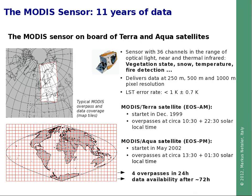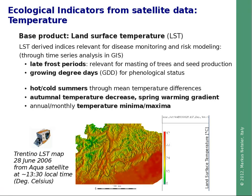We have been focusing on the land surface temperature product, from which a series of indicators can be derived. These temperature-related products are of great relevance for several disease vectors. The four maps per day can be aggregated to different proxies — for example, late frost period analysis, which is relevant for tree masting, triggering seed production and rodent presence. Another topic is growing degree days for the phenological status of plants or mosquitoes. From the time series, we can identify hot and cold summers, end-autumnal temperature decrease, spring warming gradients relevant for the emergence of ticks and mosquitoes, as well as common indicators like temperature minima and maxima.